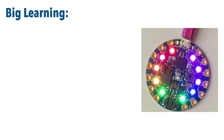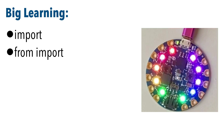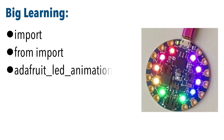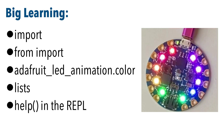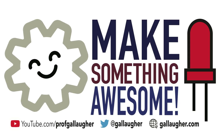Once again, we had some big learning in this lesson. We covered importing new libraries and getting just the elements we want from an import. We specifically used the adafruit_led_animation library and the color module inside it, and got sample code you can reuse anytime you want to bring in named colors for your projects. We worked with lists — a new and powerful type of sequence — and learned how to use help in the REPL. Keep at it, Coder. See you in the next lesson.